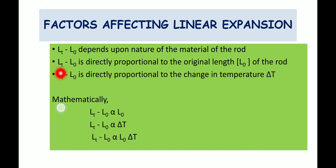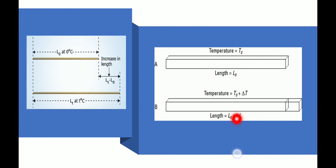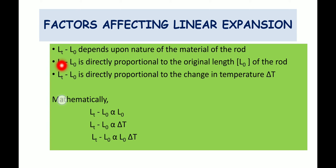The third factor is that ΔL is directly proportional to the change in temperature: the greater the change in temperature, the more will be the expansion. So L_T minus L₀, also written as ΔL, is directly proportional to ΔT, the change in temperature. These are the three factors on which linear expansion depends.